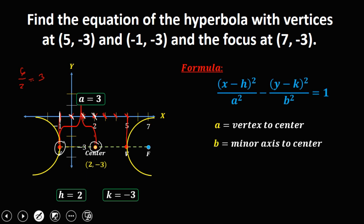Then b is minor axis to center. Since we don't have minor axis, then we have c, which is focus to center. So this is our focus and the center, so distance from focus to center is c. Just count: from this point, 1, 2, 3, 4, 5, so therefore c equals 5.